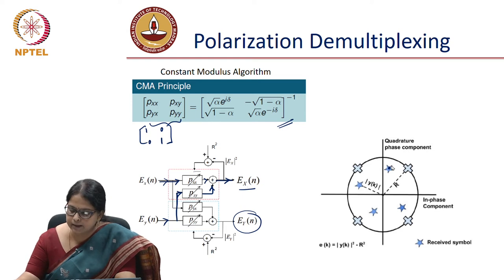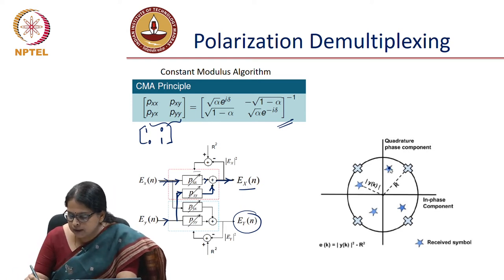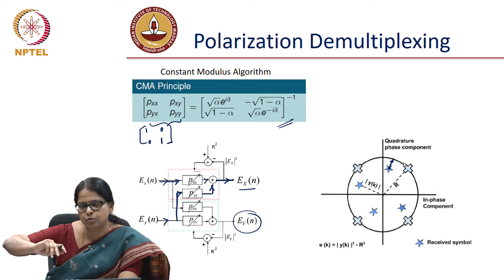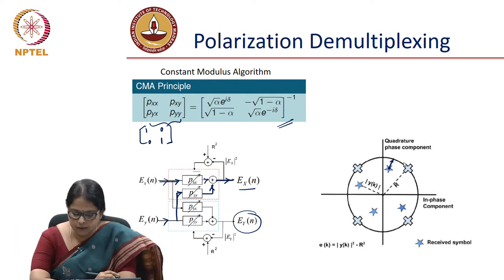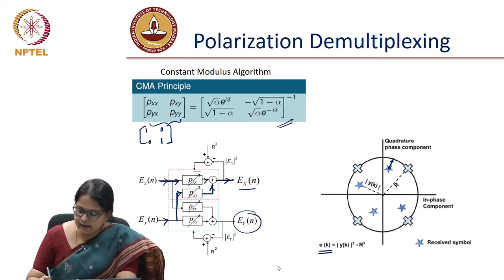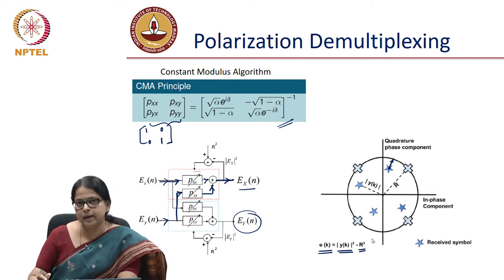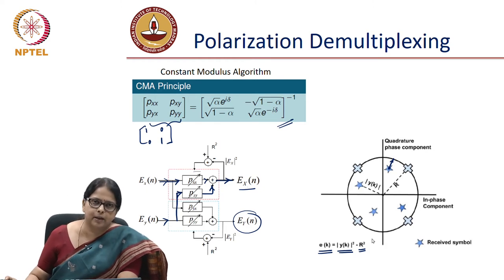You have the received symbol. What you are trying to do in this algorithm is push all the received symbols close to a circle of constant radius. You find an error vector, which is |y(k)|^2 — the squared received symbol magnitude — minus r^2, where r is the radius corresponding to your QPSK constellation.